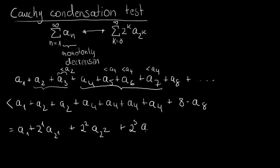So we get another sum which is an upper approximation to the original sum. If this condensed sum is converging, then by the criterion of the convergent majorant we know that the original sum must also be convergent. If the condensed sum has a finite value B, then B is an upper bound for the original series. Since the partial sums are monotonically increasing and bounded above, the criterion of convergent majorant tells us the original series converges.